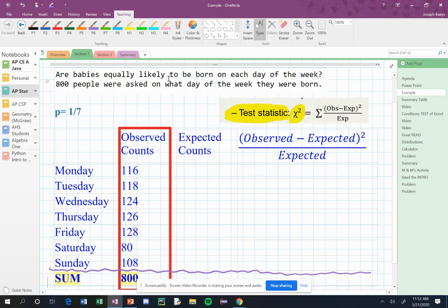Notice it's a categorical variable because there are days of the week, and we do have seven choices. We had 800 people that were asked what day of the week they were born, and this is what we discovered when we asked all 800 people.